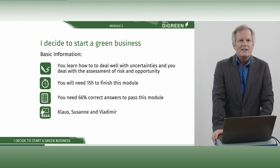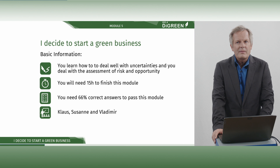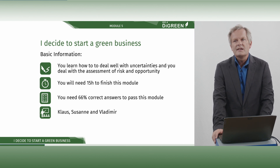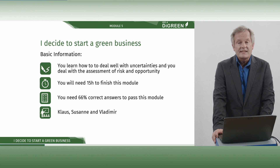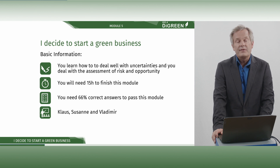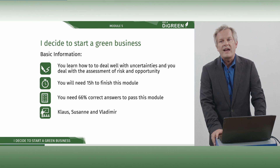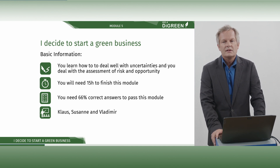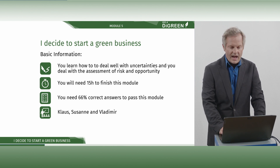What else do you need to know about this module? As a short repetition, you learn how to deal well with uncertainties, and you deal with the assessment of risk and opportunity. You will need 15 hours to finish this module, and you need 66% correct answers to pass. Your lecturers are Klaus, Susanne, and Wladimir.